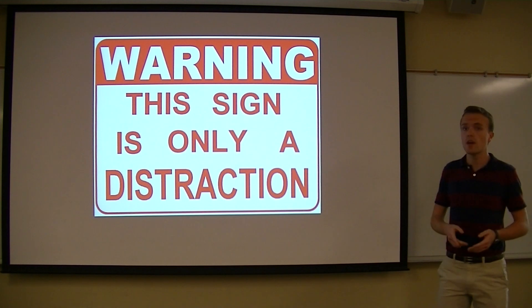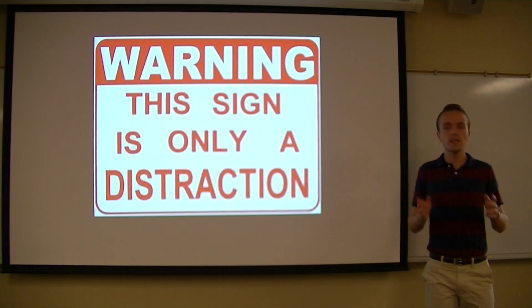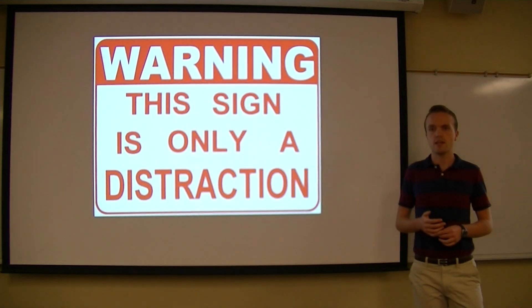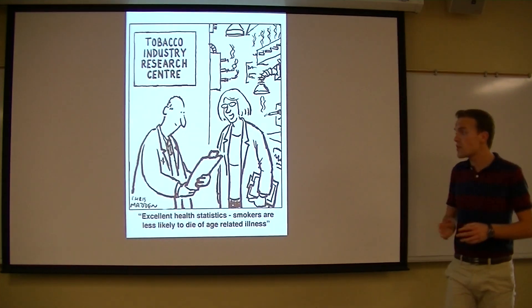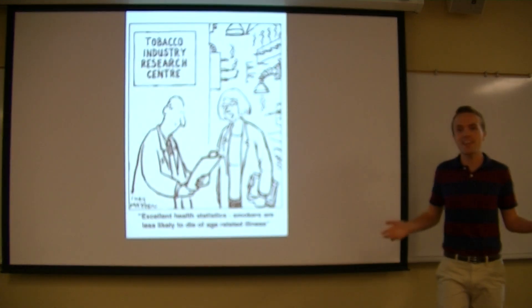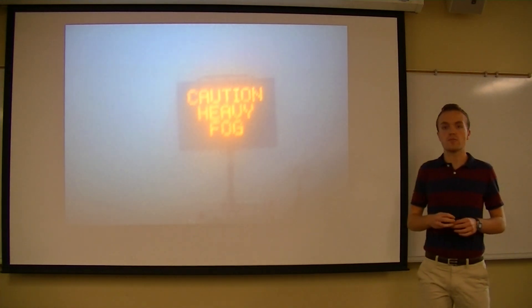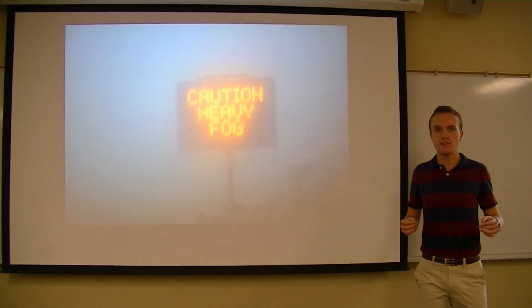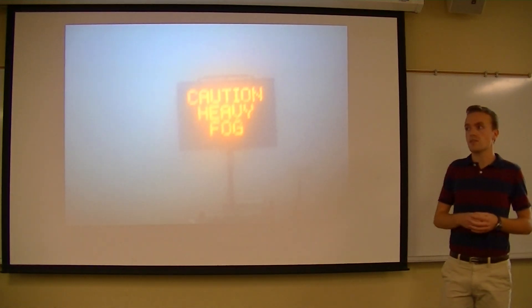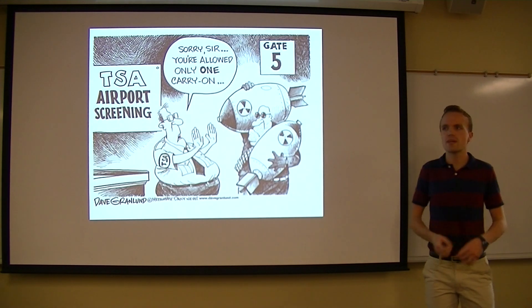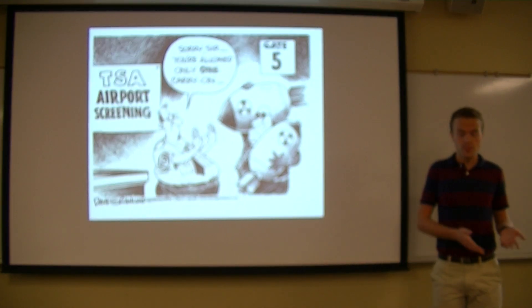There are lots of other ways that statisticians will deceive you. One common way is by emphasizing or focusing on minor statistics. For example, smoking is healthy because smokers are less likely to die of age-related illnesses — but that's really just saying smokers are more likely to die young. Traffic accidents are way more common in clear weather than in the fog, but that doesn't mean fog is safer — it just means it's not foggy very often in the first place. And should you take a bomb on a plane? It's safer because the likelihood of there being two bombs on the same plane is astronomically low. Everyone can see the faults in this kind of logic.